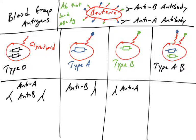What about a type AB individual? When infected by this bacteria, they would make no antibodies against these antigens because both A and B are self in these individuals. Hopefully it's now clear why individuals who are type O, A, B, or AB make the antibodies they do against blood group antigens — it all comes from the overlap between our glycolipids and bacterial glycolipids.